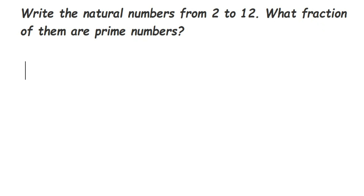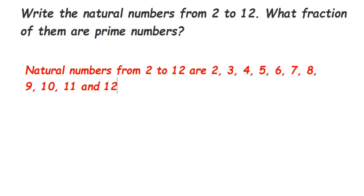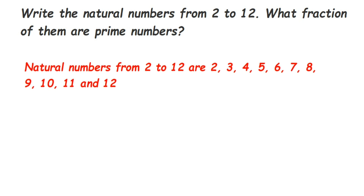First, let's write down the natural numbers from 2 to 12. Natural numbers start from 1 and go on till infinity. Since they are saying to write from 2 to 12, we are going to have 11 natural numbers — 2, 3, 4, 5, and so on up to 12.